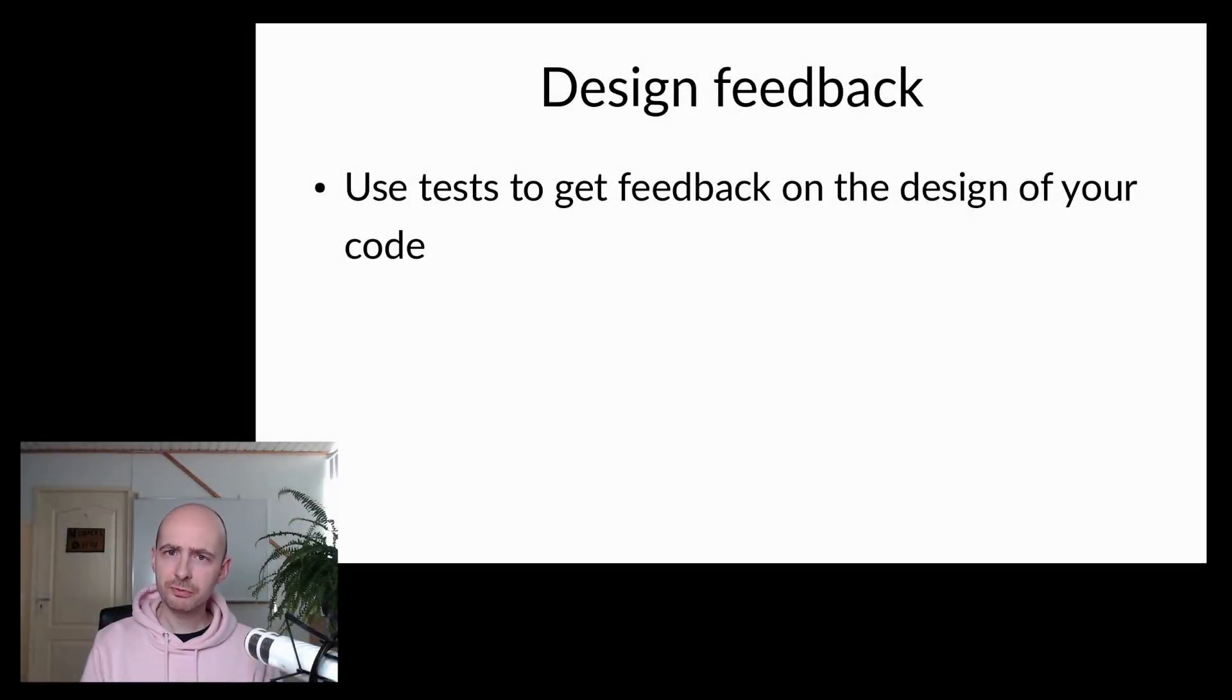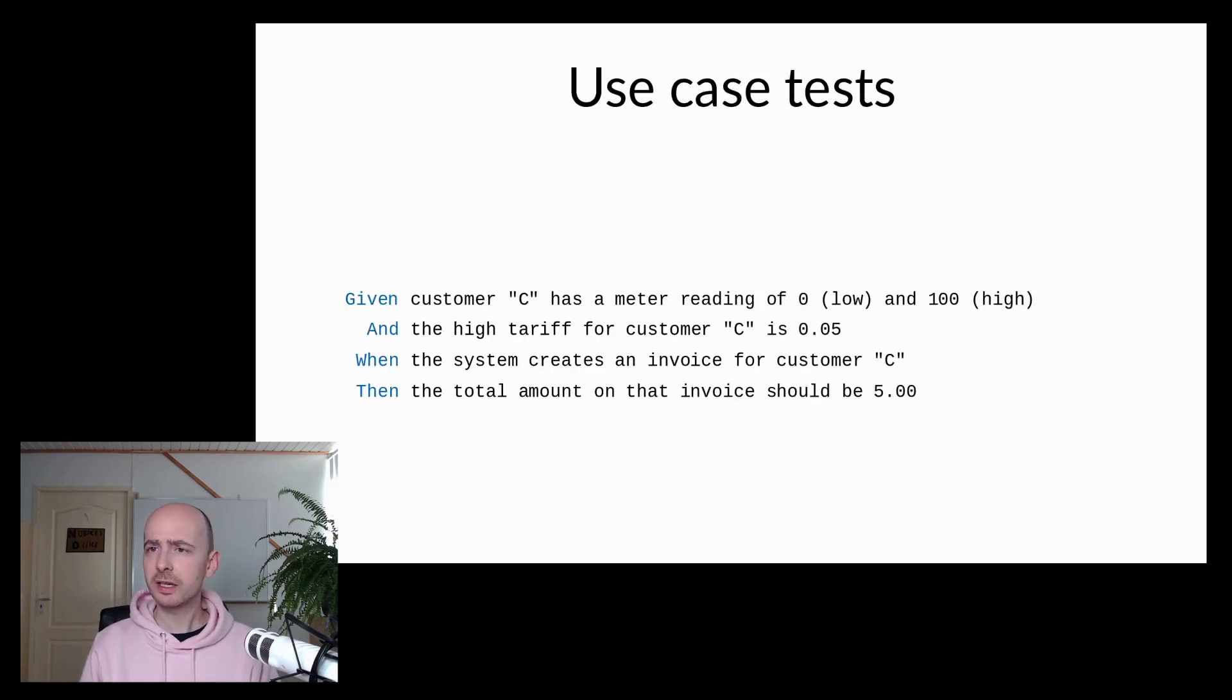Now that we've introduced an abstraction for meter readings, we might want to look for some feedback about the new design, and we can get that feedback from the tests. In the case of an application service like our invoicing service, I'd want to write a use case test in BHAT style. That is, write some scenarios in plain English, and write some code for it that executes these scenarios and shows that we have implemented them correctly. As an example of a scenario in which we test the automated creation of an invoice, we could write something like this. Given customer C has a meter reading of 0 low and 100 high, and the high tariff for customer C is 0.05, when the system creates an invoice for customer C, then the total amount on that invoice should be 5.